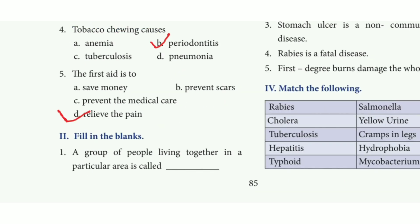4th one: Tobacco chewing causes — the answer is option B, periodontitis. 5th one: The first aid is to — the answer is option D, relieve the pain.